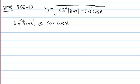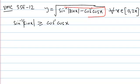This is solved example 12. We have to find the domain of this function for x belonging to 0 to 2π. Domain means we cannot have a negative number inside the square root. For y to be defined, the quantity inside the square root should be non-negative, i.e., greater than or equal to 0.